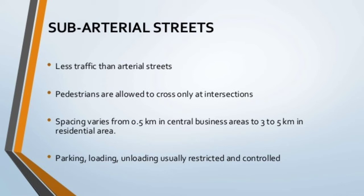Sub-arterial streets carry less traffic than arterial streets. Pedestrians are allowed to cross only at intersections. Spacing varies from 0.5 kilometers in central business areas to 3 to 5 kilometers in residential areas. Parking, loading, and unloading are usually restricted and controlled.